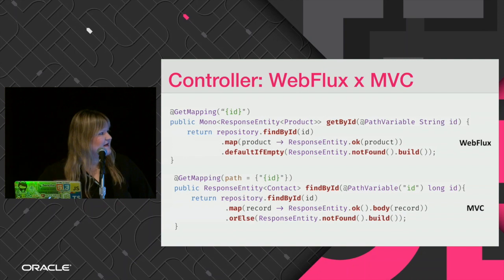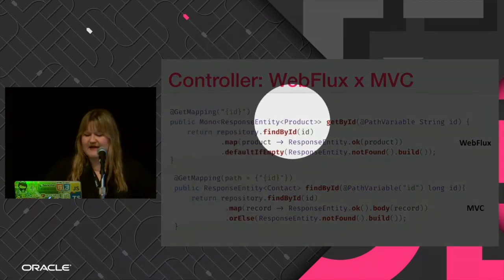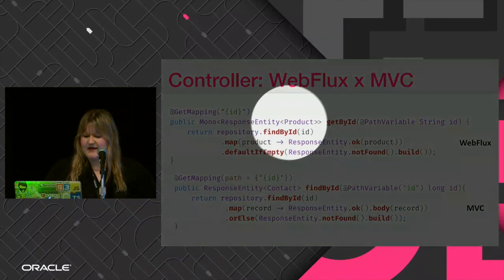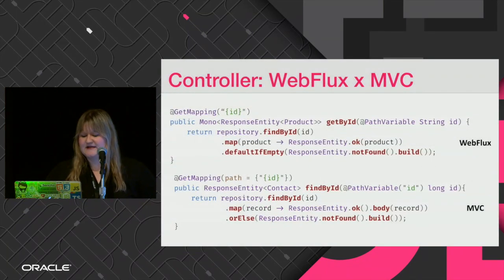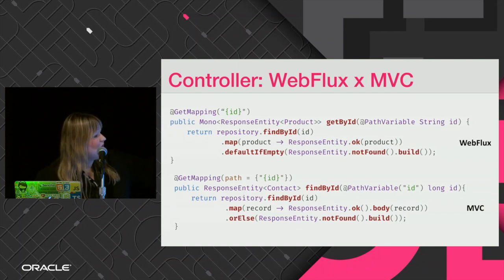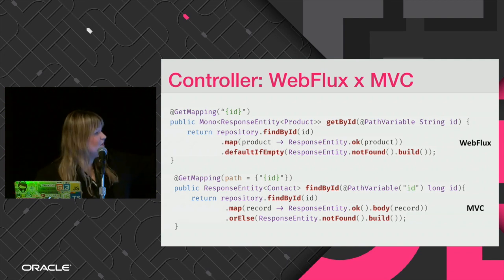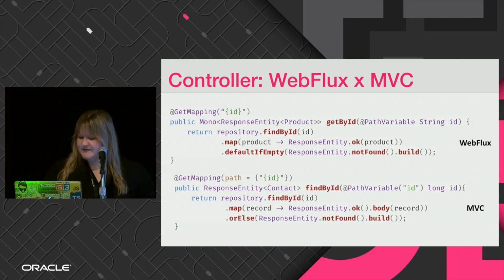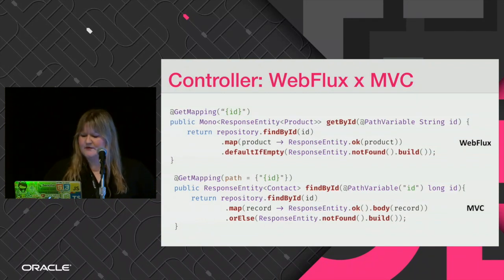Here is the findById example. For the reactive way, we have Mono of ResponseEntity of a single product. For MVC, we have a ResponseEntity with the single object. Both call findById — one uses the JPA repository, the other uses the reactive MongoDB repository. It's basically the same: we do a map and defaultIfEmpty. The only difference is in MVC we use orElse because the repository returns Optional instead of Mono.